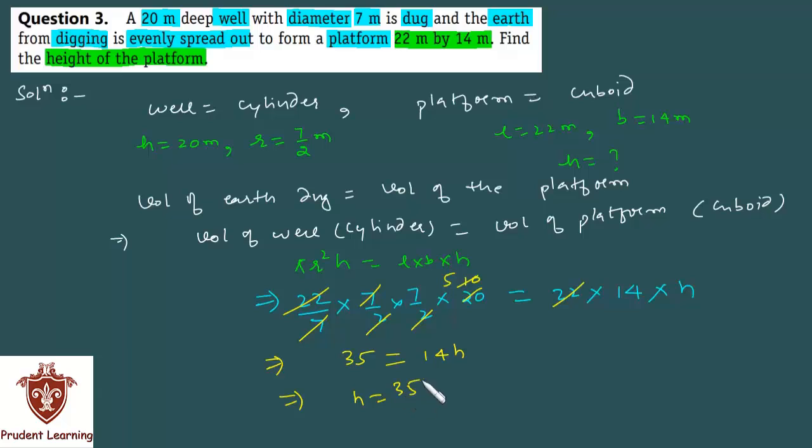Which gives us h as 35 over 14 and we have 7 twos are 14, 7 fives are 35, which implies h is 5 by 2, that is 2.5 meters. So the height of the platform is 2.5 meters. This completes our solution.